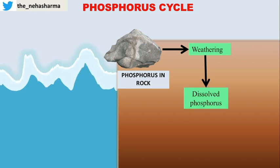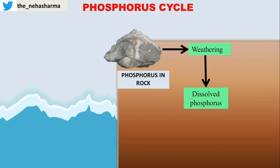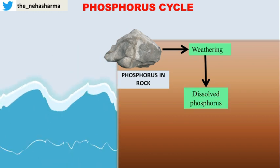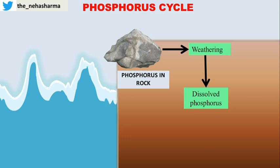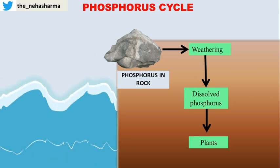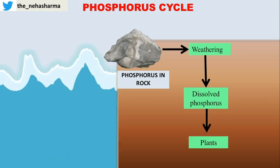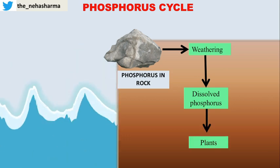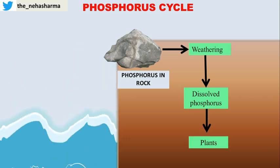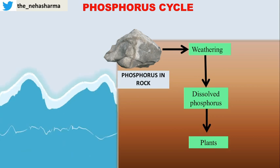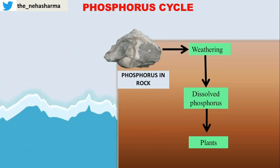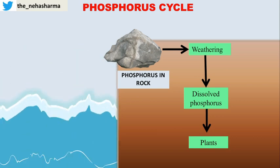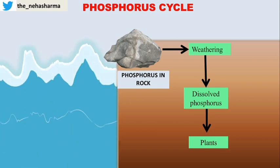Ultimately, dissolved phosphorus becomes available in soil. This dissolved phosphorus can be utilized by all plants, which use it for the formation of leaves, stems, and other body parts.